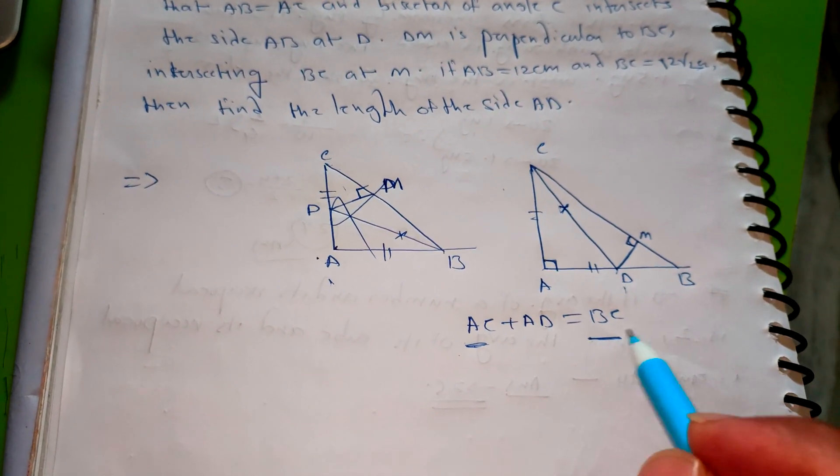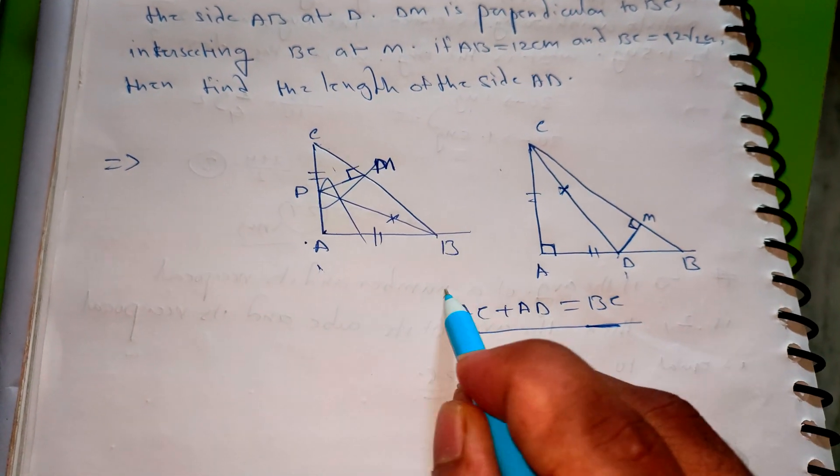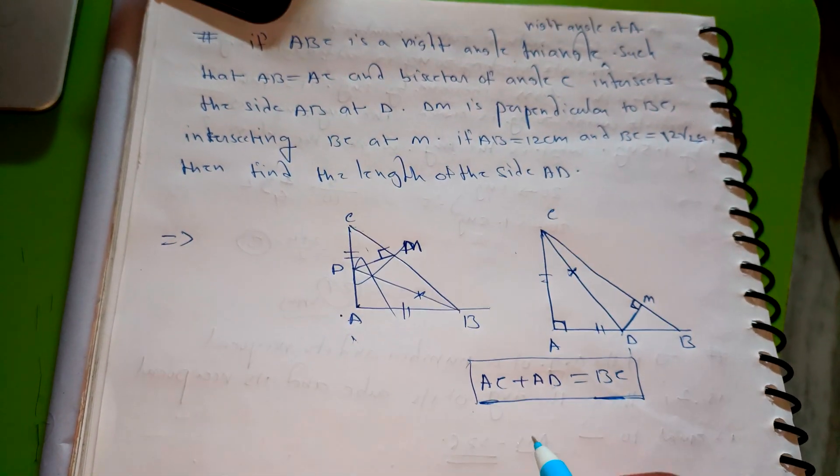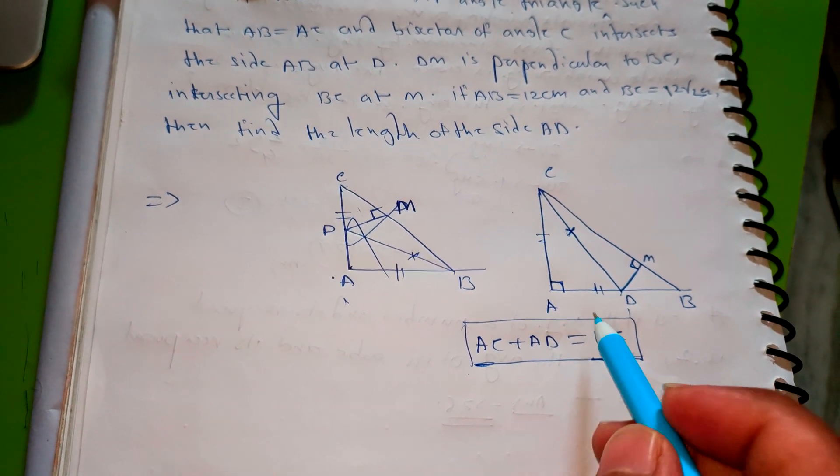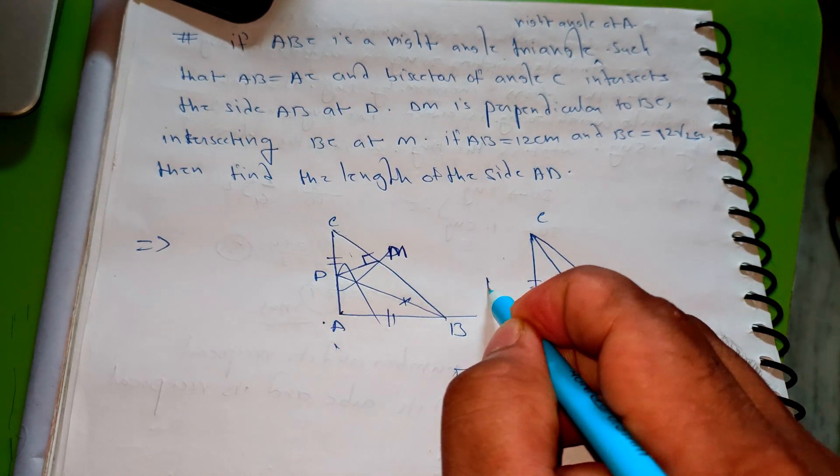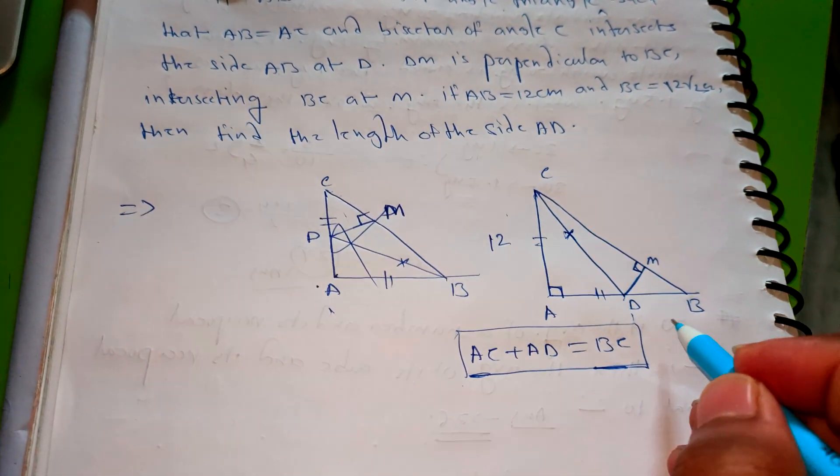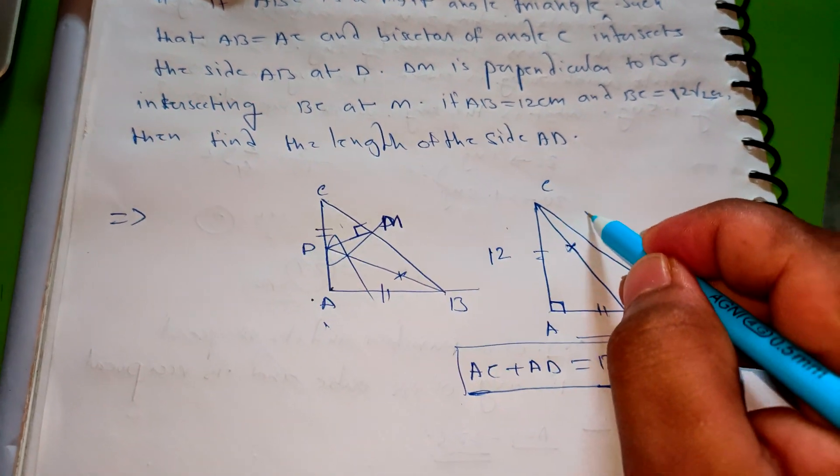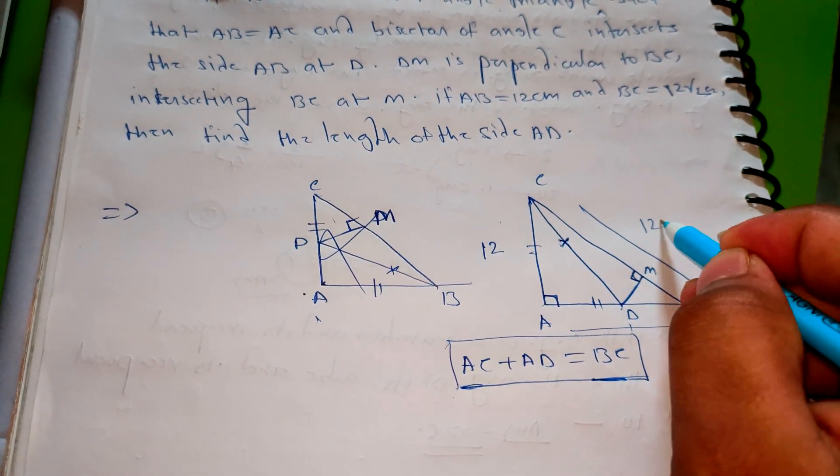This is the formula you have to remember. So in the given problem, AC is 12, AB is also 12, and this is 12 root 2.